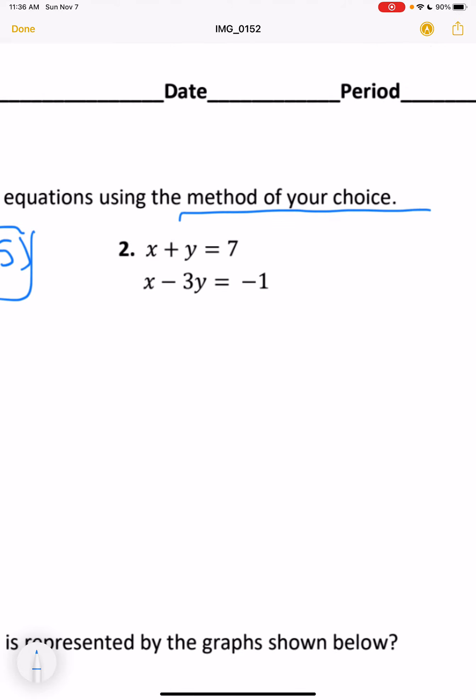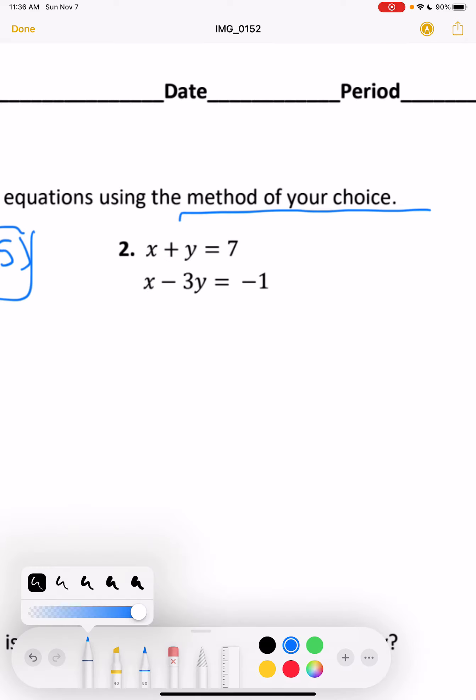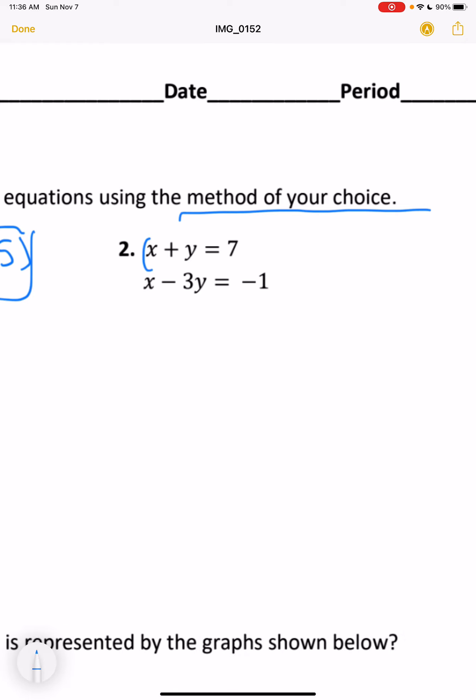Our next one, I would go with either substitution or elimination on this one. You could easily isolate one of our variables. Nothing immediately cancels out. But we could multiply the top equation by negative 1 to make this an elimination problem.